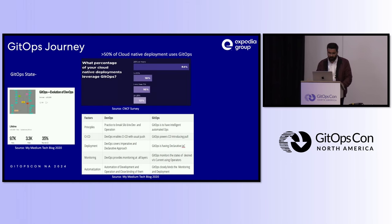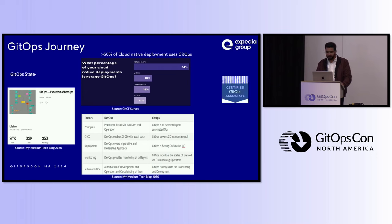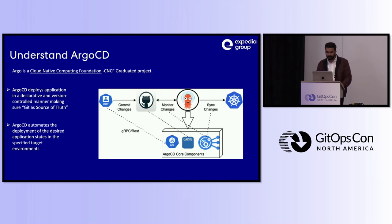I took this screenshot from the CNCF survey where they say that greater than 50% of cloud-native deployments are already using GitOps. We've also heard today that a Certified GitOps Associate and Certified Argo Project certifications were recently announced at KubeCon. So GitOps is quite at the maturity stage right now.